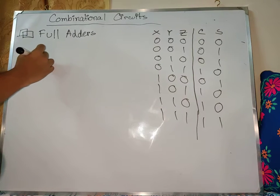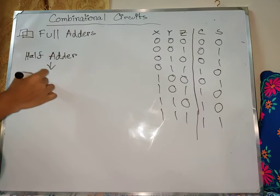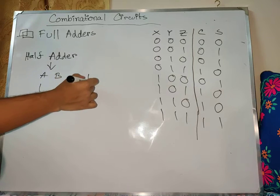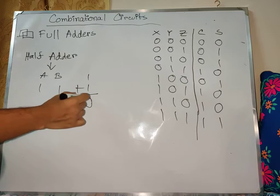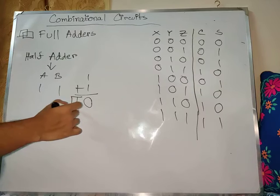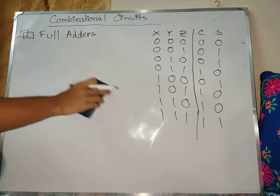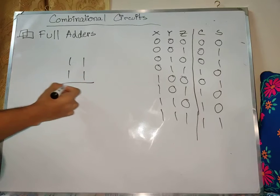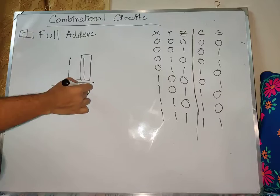For the half adder, we were talking about this problem — we were dealing with the same two bits, like a and b. So consider 1 plus 1: the result is zero and carry is 1. So the result is zero and carry is 1.